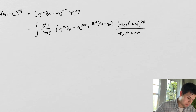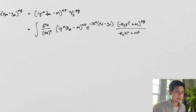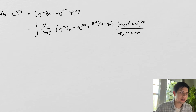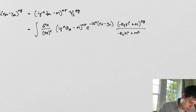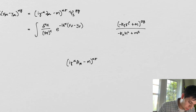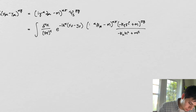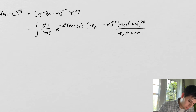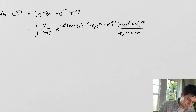We also have an i out front that came from the derivative acting on the exponential, and the i times i gives us a negative one. So we can then take that and move a few things around, and rewrite: the i times i was minus one, then we have this k_mu and we have this gamma^mu.